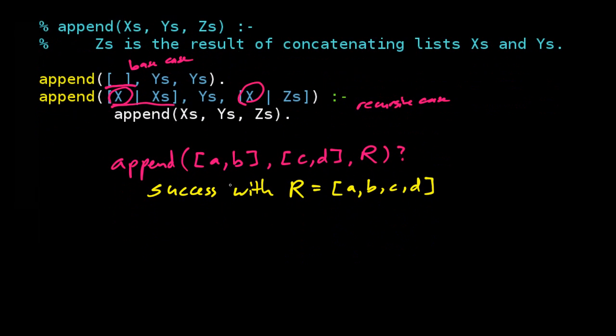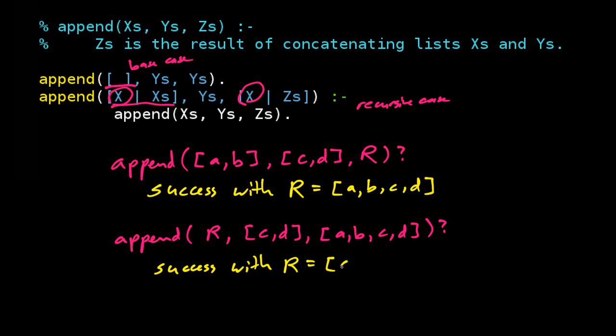But then the interesting thing about logic languages is that you can do things like this. Now we're asking appending R plus C, D equals A, B, C, D. How do you make that happen? And Prolog will think and it will say, yes, that also succeeds. That will succeed with R equals A, B.